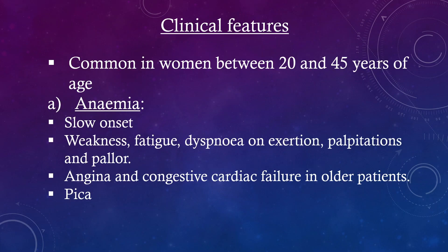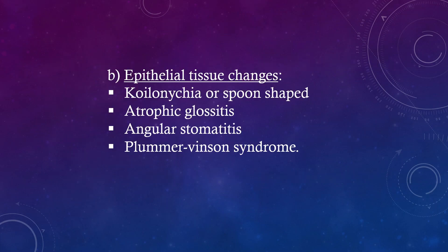Clinical features: common in women between 20 and 45 years of age. Anemia has a slow onset with weakness, fatigue, dyspnea on exertion, palpitations and pallor. Angina and congestive cardiac failure may occur in older patients. Epithelial tissue changes include koilonychia or spoon-shaped nails, atrophic glossitis, angular stomatitis, and Plummer-Vinson syndrome.